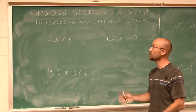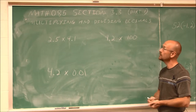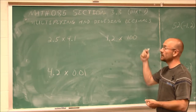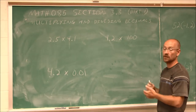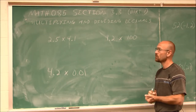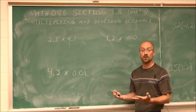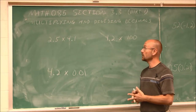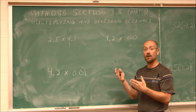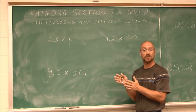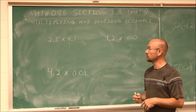Hello and welcome to Bay Colleges video lectures for Math 085. This is section 3.3, part 1. We're going to look at multiplying and dividing decimals in this section, but this video is going to concentrate on the multiplication of decimals. When it comes to multiplying decimals, it's very similar to multiplying whole numbers. The only thing we have to do is count the number of digits to the right of the decimal when we get to the end, and we'll see that in the examples.